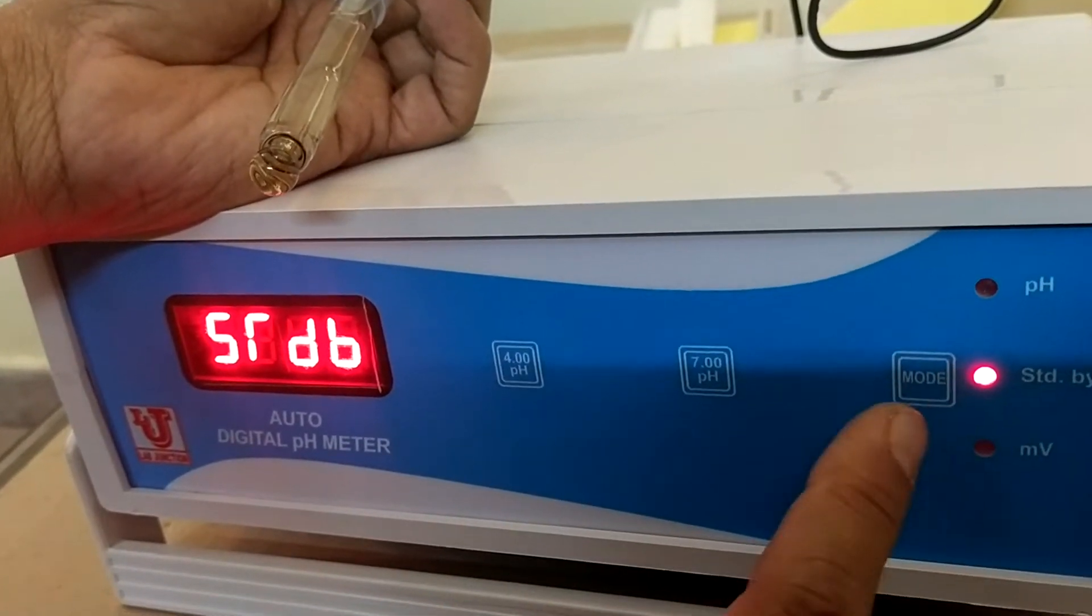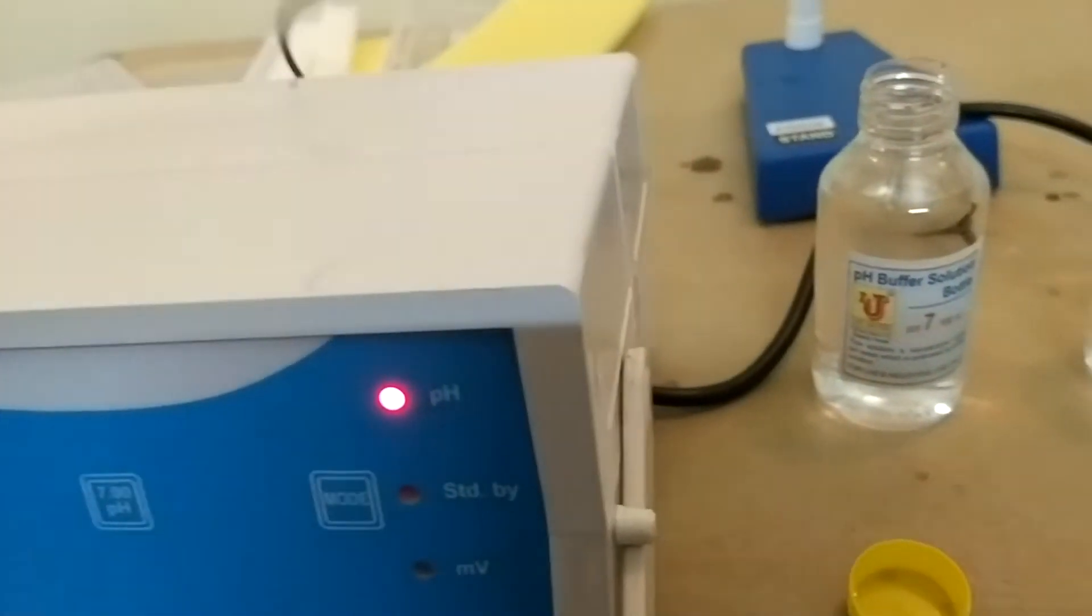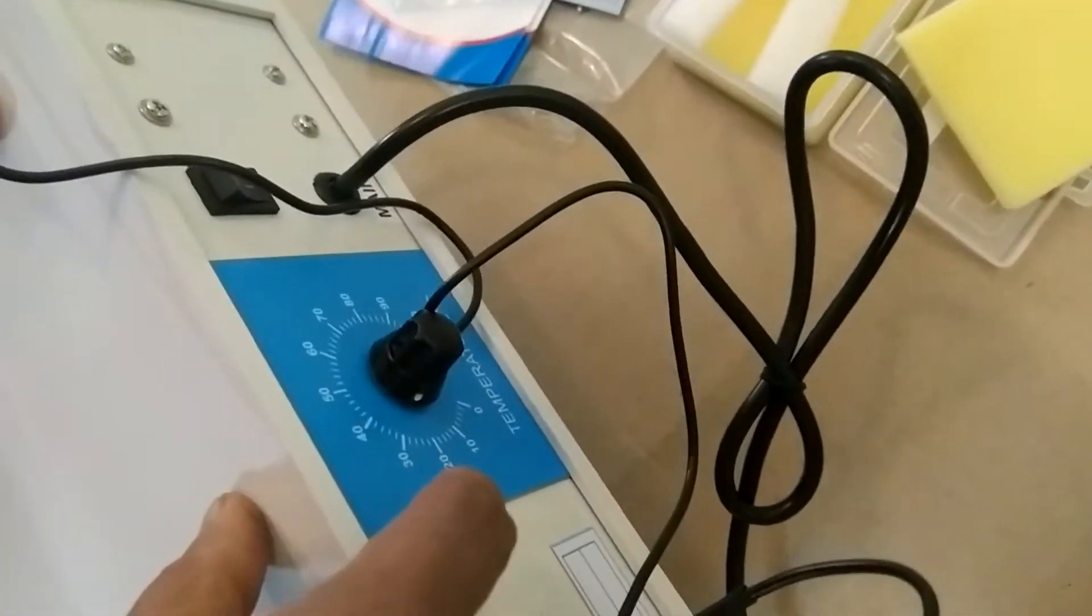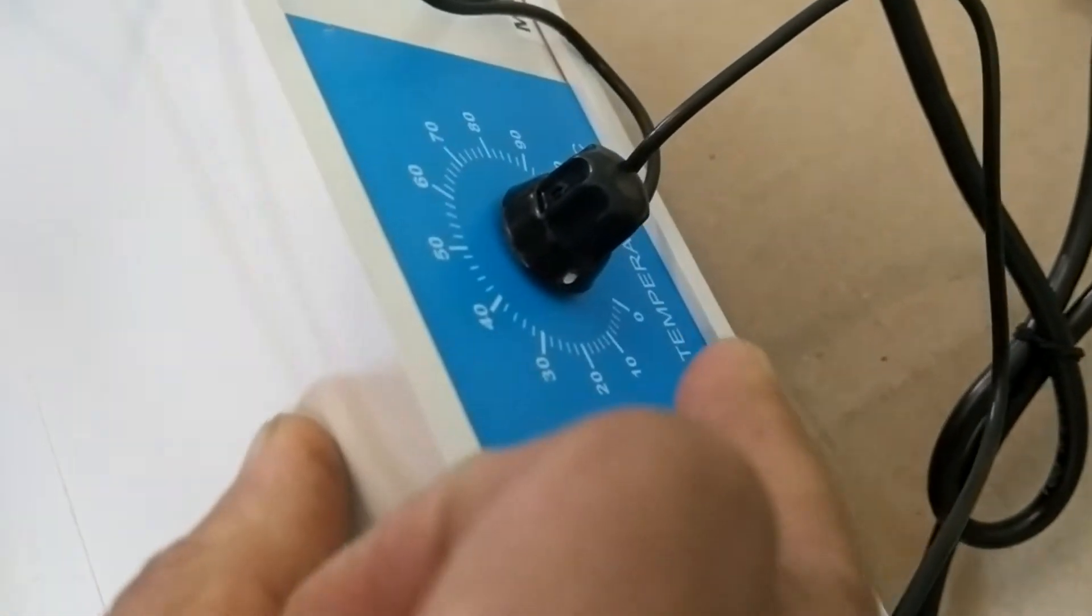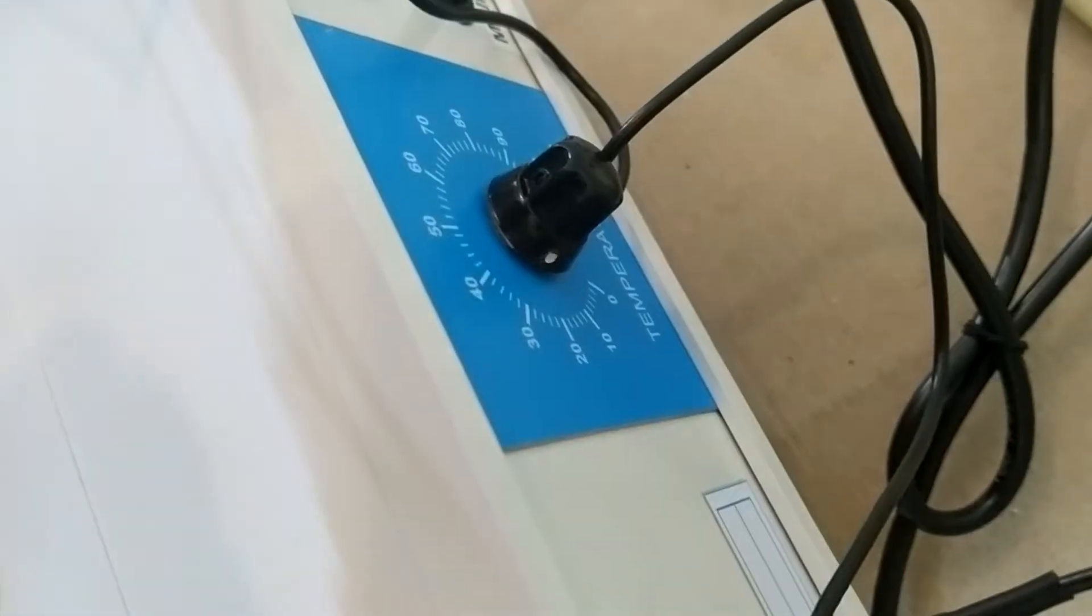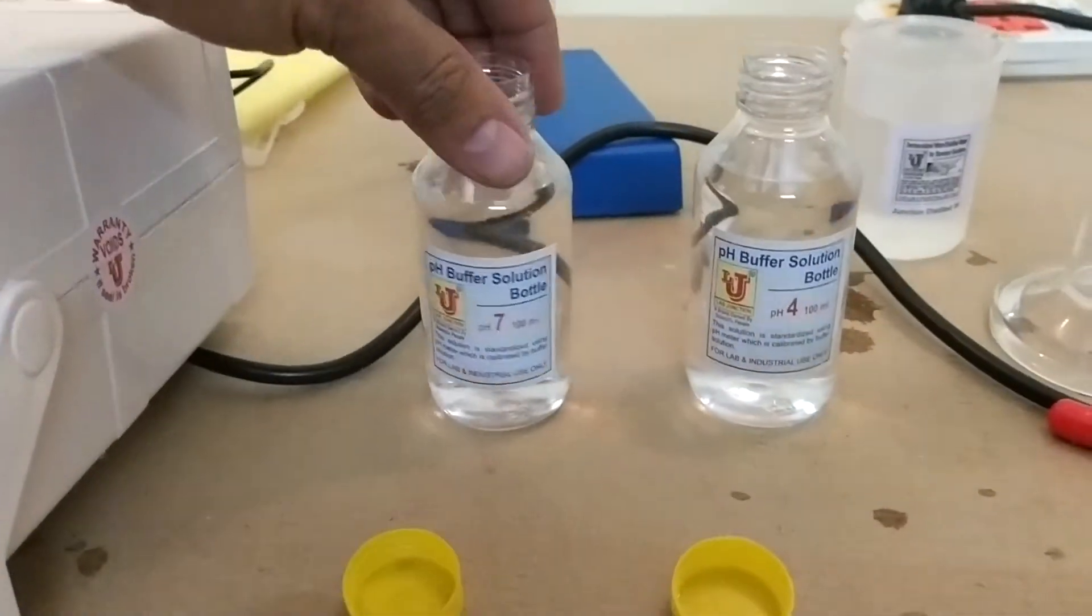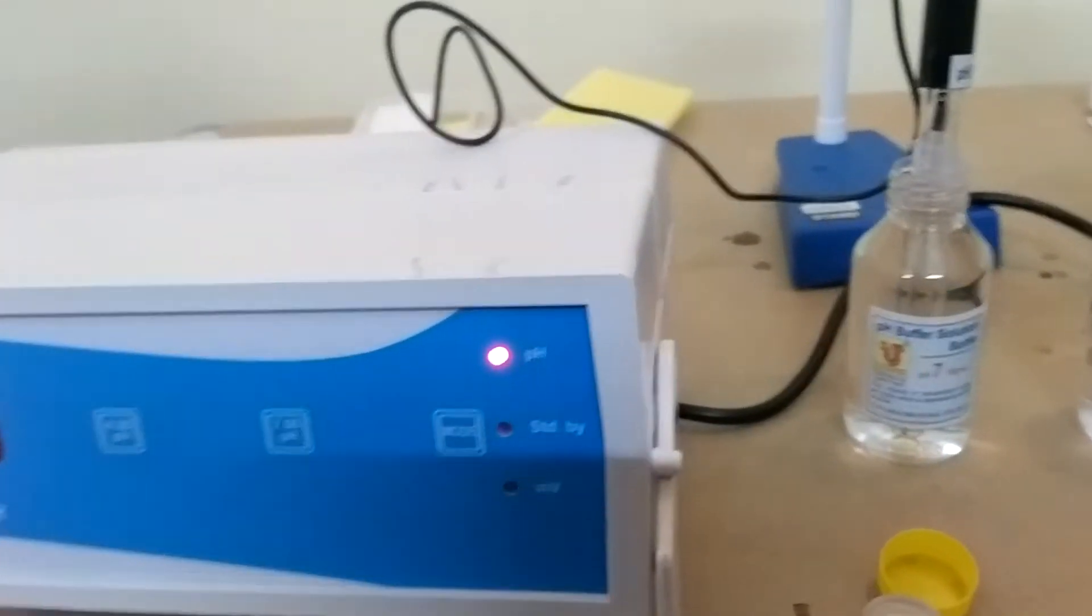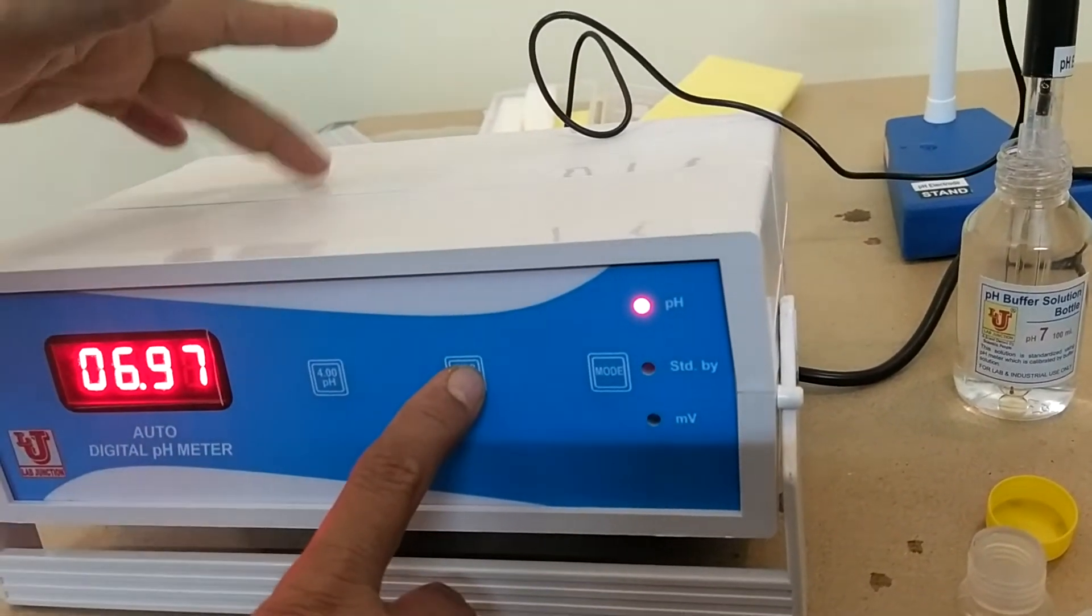Now we can calibrate this pH. Take your temperature from this control. I set temperature to 25. You can set as your demand 20, 30, 40 as ever you want. Now, how we can calibrate this. First of all, always first, you can dip in 7 pH buffer solution. Suppose 6.98 comes, you can press 7.